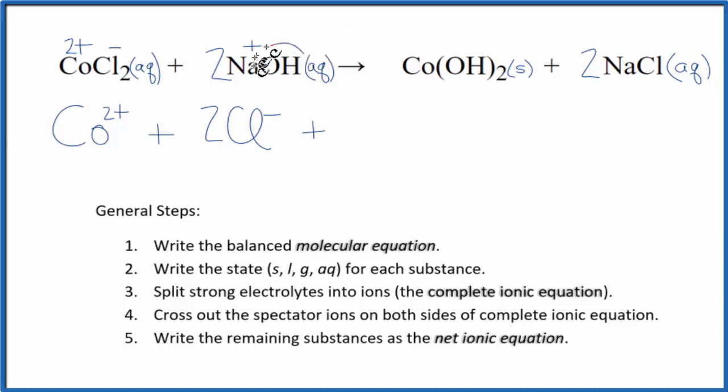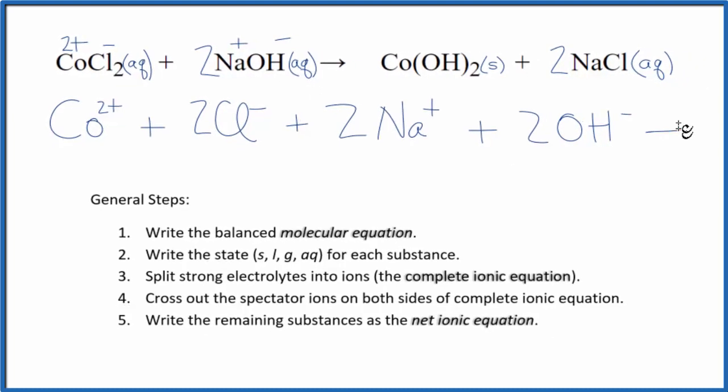Plus sodium group one, has a one plus charge. Hydroxide ion, that's one minus. Good one to remember. So we have two sodium ions. And we have two hydroxide ions. So this gives us the reactants in our equation.